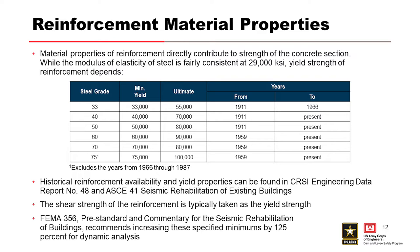For steel reinforcement material properties, we're often looking at older structures 50-plus years old, and rarely do the drawings indicate the yield strength of the steel. If you have the specs, you may track down the steel type. There are guidances providing approximate yield strength based on the timeframe of construction. Good references include Report Number 48 and ASCE 41, the seismic rehabilitation of existing buildings, and FEMA 356. During seismic load, you can actually push these yield strengths by 125% for dynamic analysis.